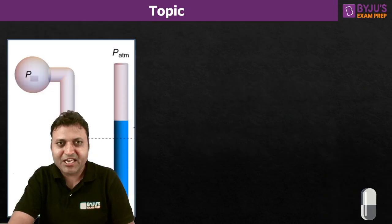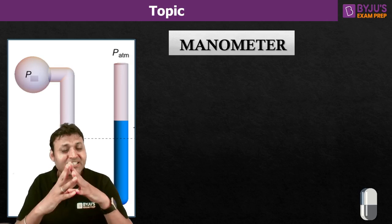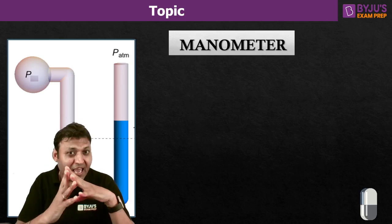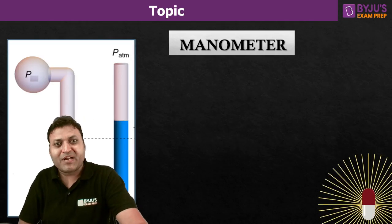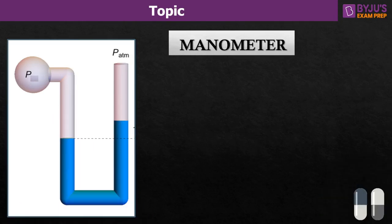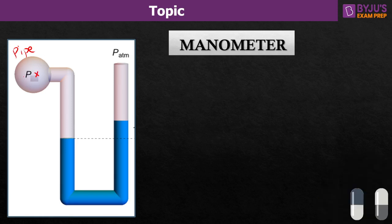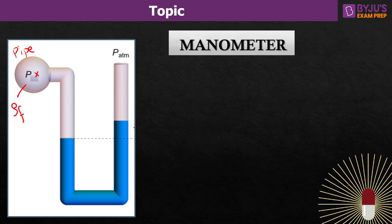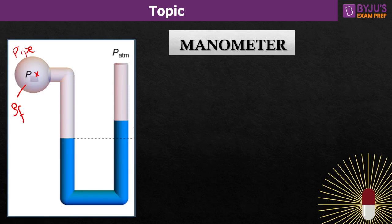Let us start our session. So what is a manometer? A manometer is a pressure measuring instrument which is based on the balancing of the fluid column as per the pressure difference. This is the U-tube manometer — you can see it here. This is the U-tube manometer when the left limb was not connected to the pipe. This is the pipe where we need to measure the pressure; this is where the fluid is flowing. The density of the flowing fluid is lower.